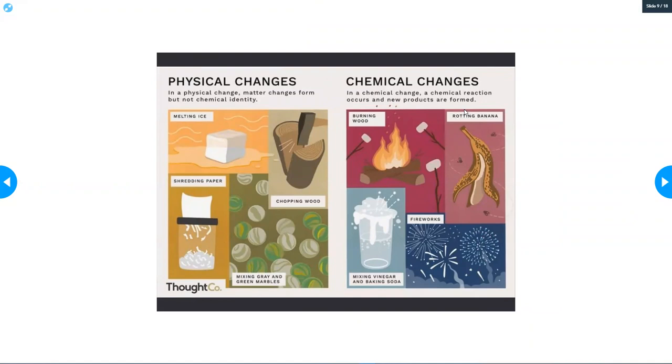Chemical changes. In a chemical change, a chemical reaction occurs and a new product is formed. Burning wood, a rotting banana, mixing vinegar and baking soda, and fireworks are all chemical changes.